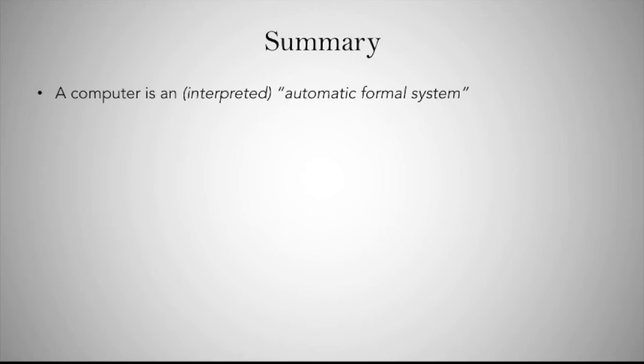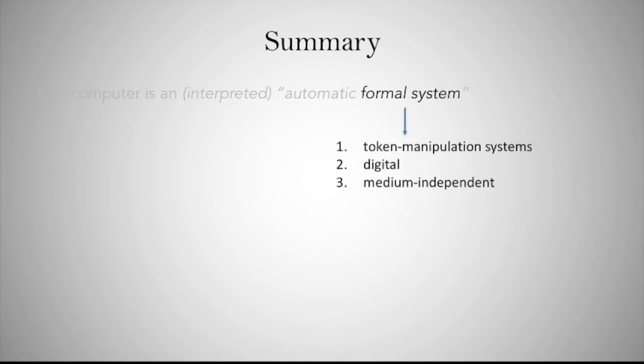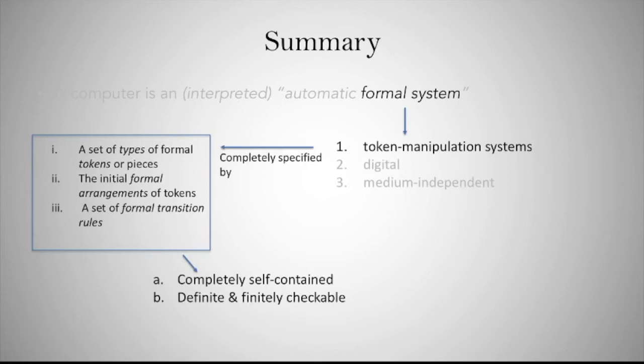A formal system is a token manipulation system that is digital and is medium independent. A token manipulation system is completely specified by determining a set of types and the tokens that are included in them, the initial formal arrangements, and a set of translation rules. Thus those systems are going to be completely self-contained, definite, and finally checkable.